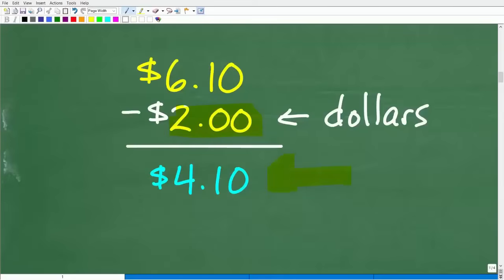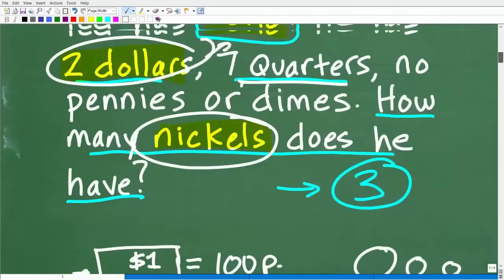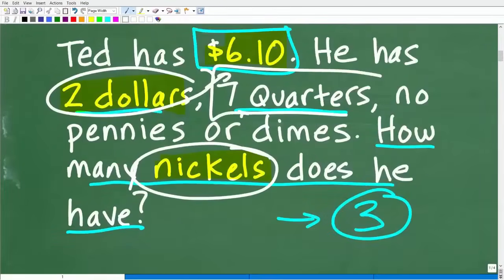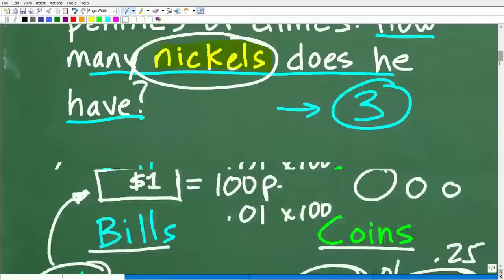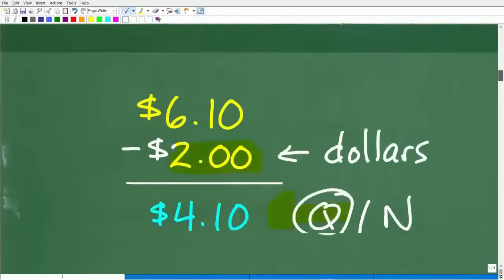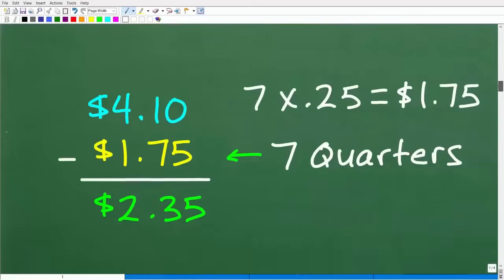Now, right here, he doesn't have any pennies or dimes. So the only thing that this $4.10 is made up of is quarters and nickels. But we do know how many quarters Ted has. The problem indicated that Ted has seven quarters. So let's take away the value of those quarters.